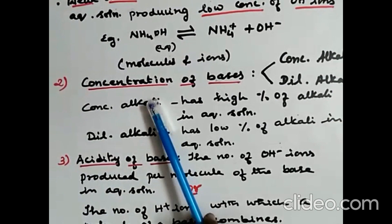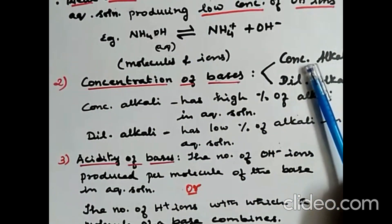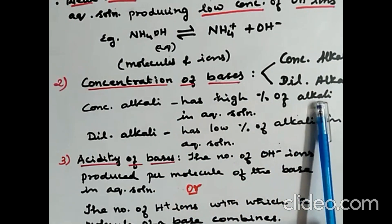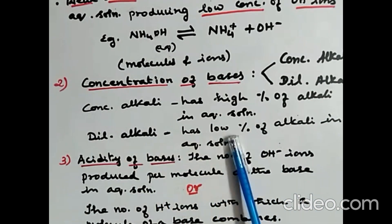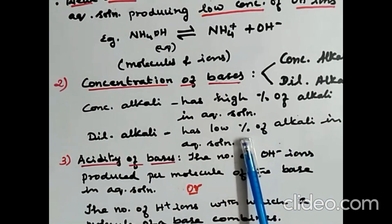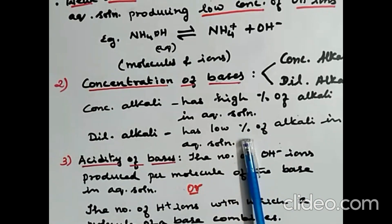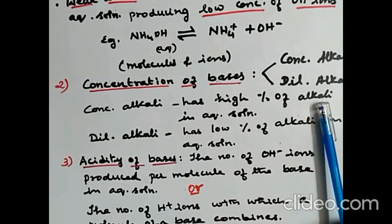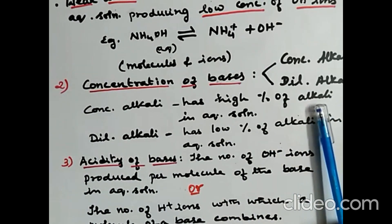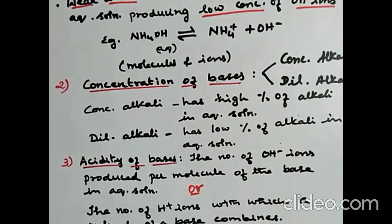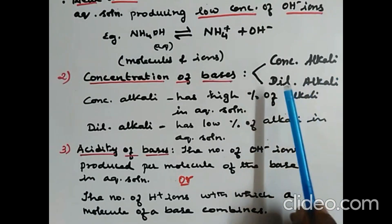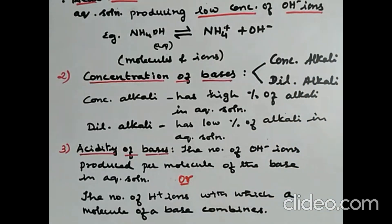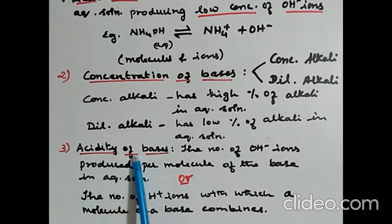Based on the concentration of bases, they can be classified into concentrated alkali and dilute alkali. Concentrated alkali has a high percentage of alkali in aqueous solution; dilute alkali has a low percentage. For example, in 100 ml of solution, if 90% is water and 10% is alkali, it is a dilute alkali. If it is 90% base and 10% water, it is a concentrated alkali.